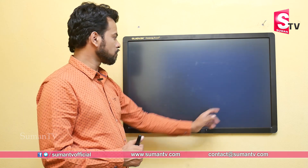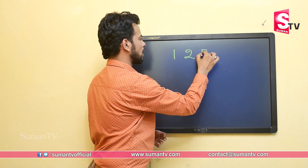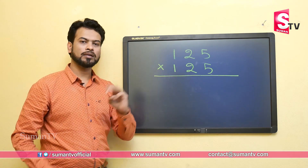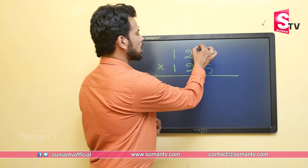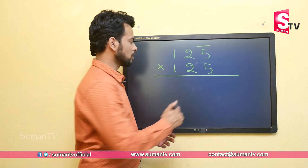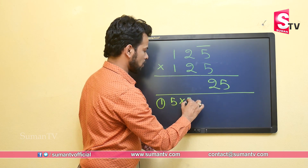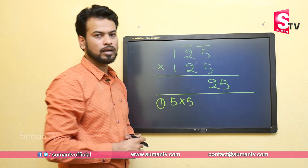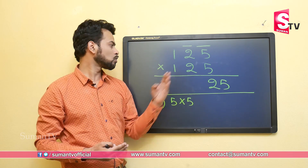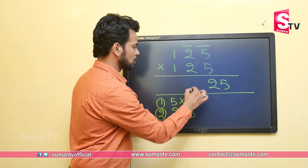Now let's learn what happens with a three-digit number. Let's take 125 multiplied by 125. Because there are three digits, we solve in three steps. Step one is the same: multiply unit digit with unit digit — 5 multiplied by 5 is 25. Step two: the tens digit is 2; multiply 2 with its successor 3, giving 6.